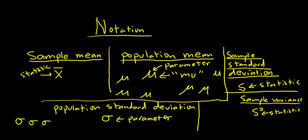And the very last one is the population variance. The population variance is simply sigma squared. And again, this is a parameter.